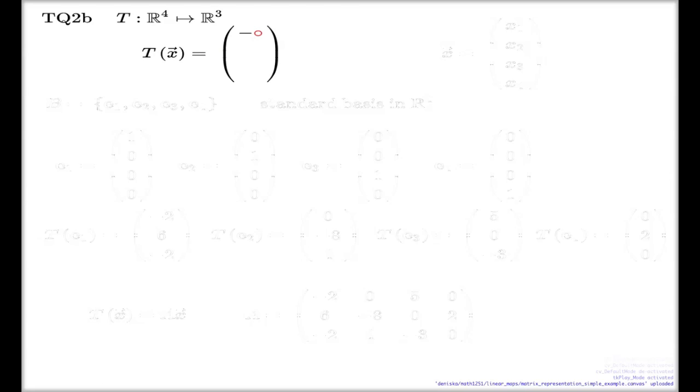T of x, it will be a three-dimensional vector. It will be a triple of numbers. And that's how you take these numbers. First component: negative 2x1 plus 5x3. Second component: 6x1 minus 8x2 plus 2x4. And the last component is negative 2x1 plus 4x2 minus 3x3.